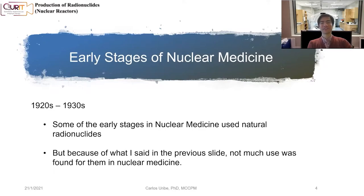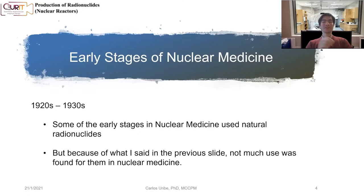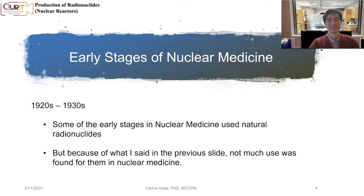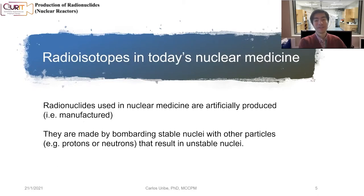Nuclear medicine is functional — it gives us functional imaging, information about how the body is working. What we want to track and image is a radioisotope or radiopharmaceutical that has some function in our metabolism or physiology. These naturally existing heavy elements are not that important, which is why people didn't find much use for them. So if we want to use radionuclides in nuclear medicine, we have to manufacture them ourselves.